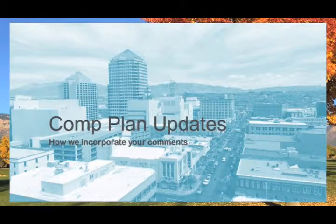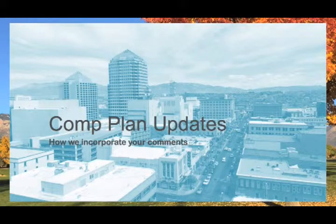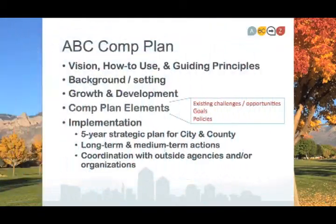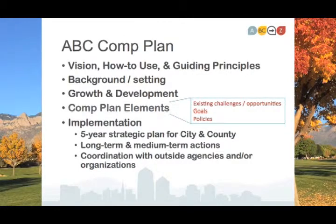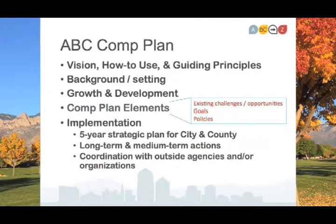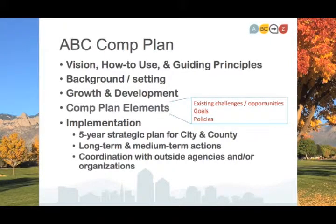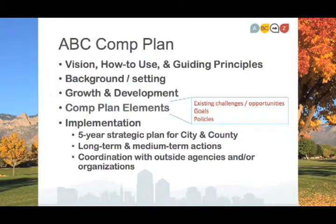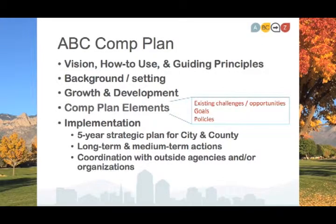The update to the jointly adopted city and county comprehensive plan will incorporate the comments heard through our extensive public engagement process. An updated comprehensive plan will include a new section that highlights the vision and becomes a people's summary of the very large document. If people don't want to read 300 pages, they can read a pullout version that is the 30,000-foot view of what we want as a community. The plan will include updated sections on our background and the growth we're expecting over the next 20 years.